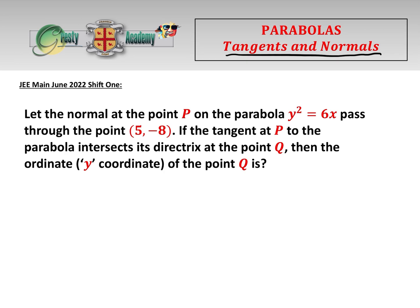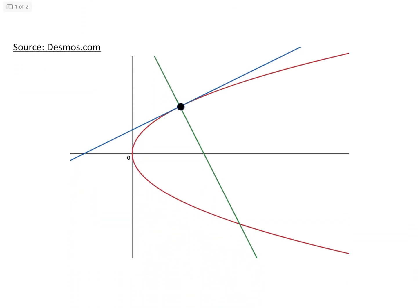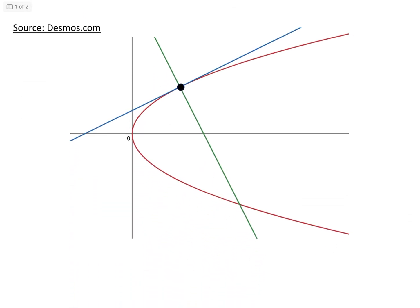Basically, they're talking about the normal, the tangent, and the directrix. What we need to do is work out the coordinate of point Q. But first, I want to find the equation of the tangent and the normal for a parabola. I tend to find I don't need to remember them — I just work them out whenever I need them.